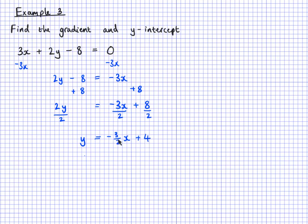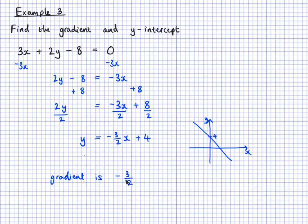The y-intercept is 4. So sketching this: I draw some axes, I know there's a negative gradient so the line goes like this, and plus 4 means it crosses here at 4. The negative gradient means the line goes like this, crossing at 4. So the gradient is negative 3 over 2 — notice I didn't write negative 1.5. And the y-intercept is 4.